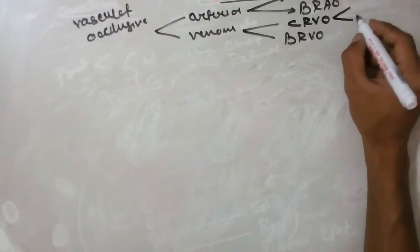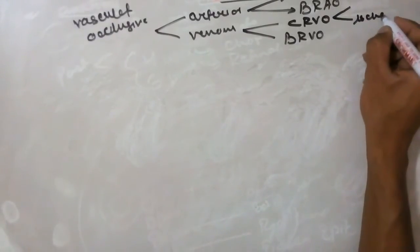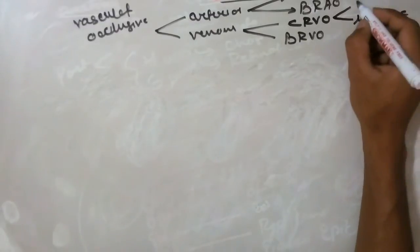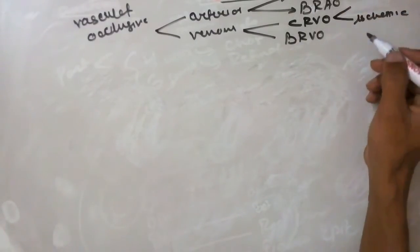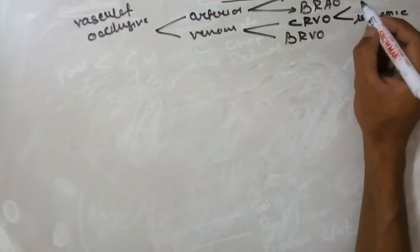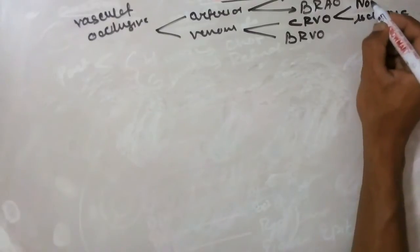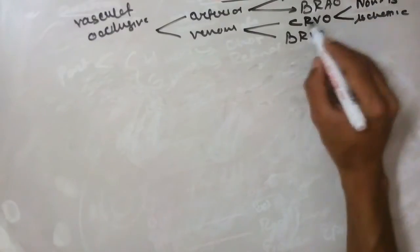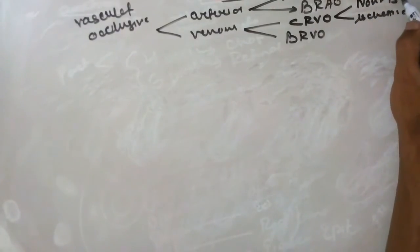Venous occlusion can be of the ischemic type or, if ischemia has not occurred, the non-ischemic type. Central Retinal Vein Occlusion (CRVO) can also be of the ischemic type.